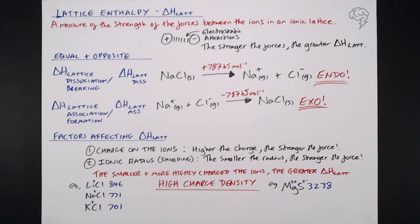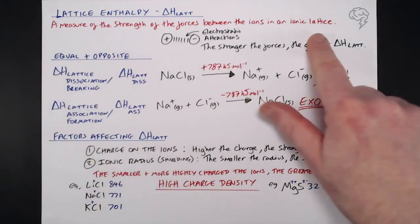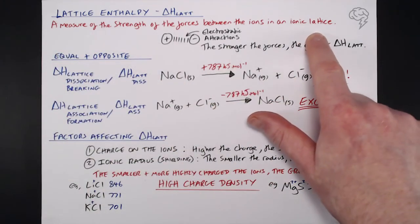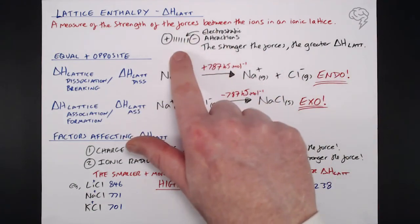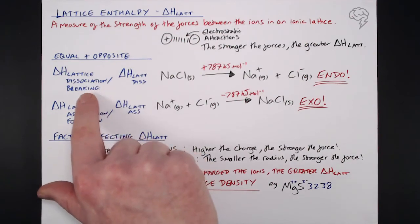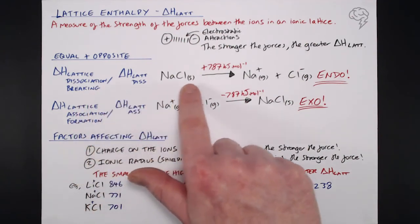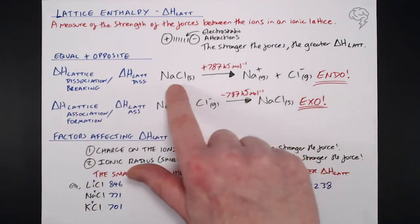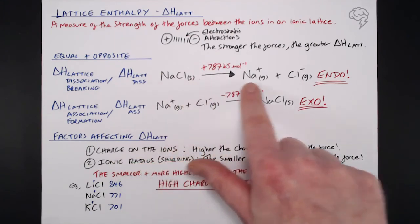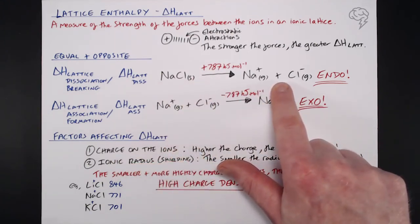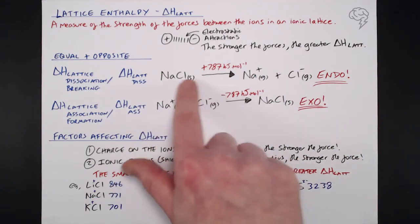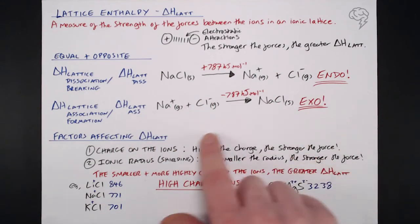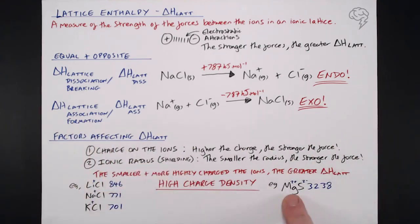So what I would say is definitely know your definition: measure the strength of the forces between the ions in an ionic lattice. We're talking about these electrostatic attractions. We've got lattice dis, which is the breaking of that salt in its standard form to produce gaseous ions. The opposite, the lat-ass, is where you take those gaseous ions and bring them together. And of course, we need to understand these factors affecting Delta H lattice.